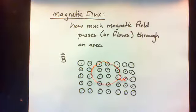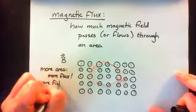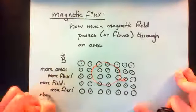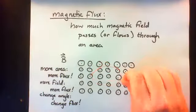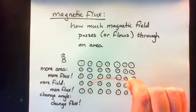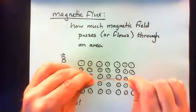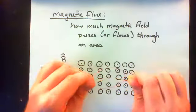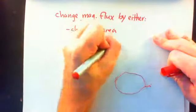A third way we can increase the magnetic flux is to adjust the angle between the loop and the magnetic field. If we keep turning it until the loop is perpendicular to the field, then none of that magnetic field is passing through it. So there are three ways we can alter the magnetic flux: we can change the area, we can change the magnetic field, or we can change the angle that the loop makes with the magnetic field.